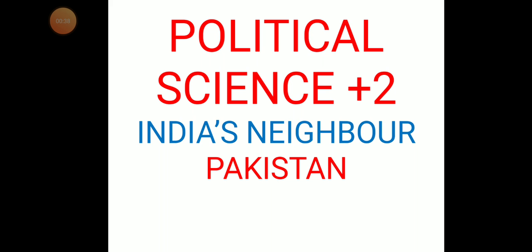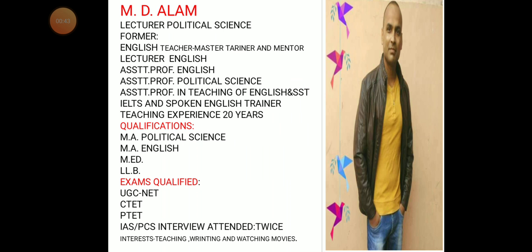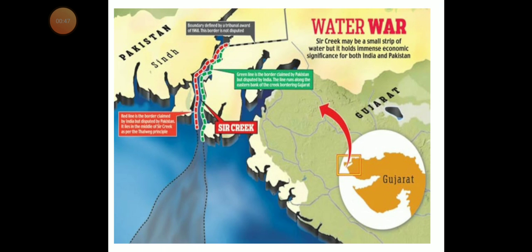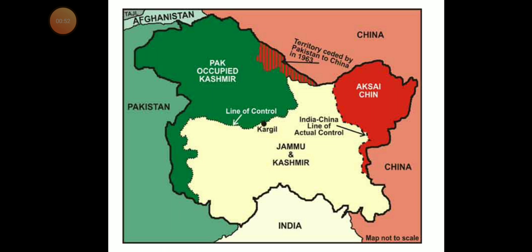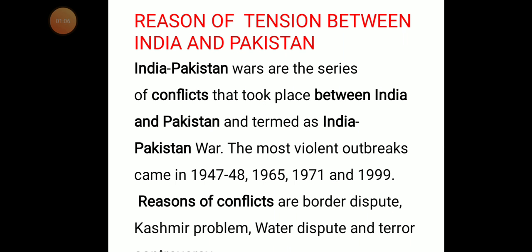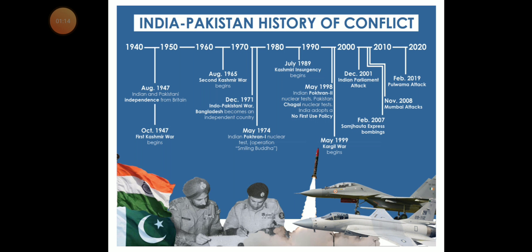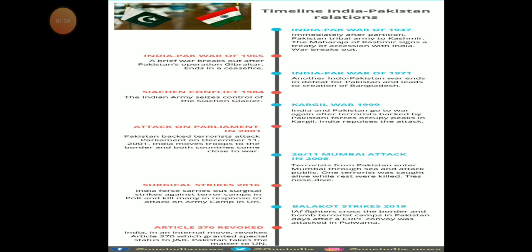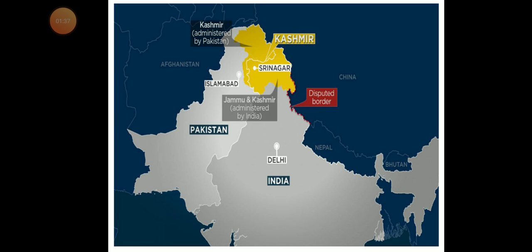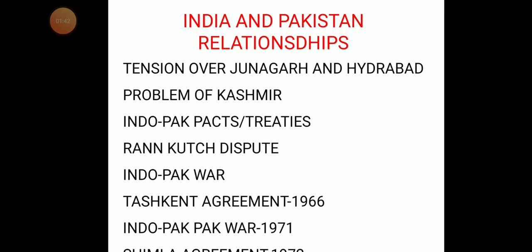In the first video, I explained with a map. Here is a quick look at the relationship issues: there is a problem of water, then the Sir Creek problem, then the territory ceded by Pakistan to China, the Pakistan-occupied Kashmir problem, and tensions since formation. The Indo-Pakistan conflict timeline covers the 1940s, 50s, 60s, 70s, 80s, 90s, 2000s, 2010s, and up to 2020, including the revocation of Article 370 in Kashmir.